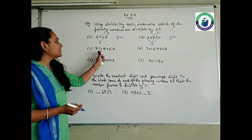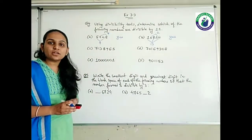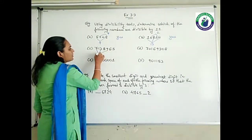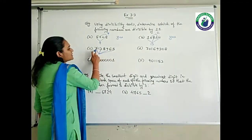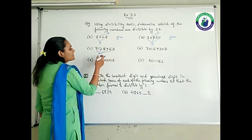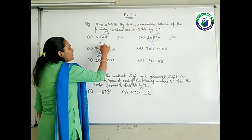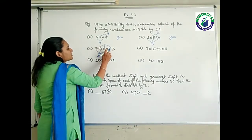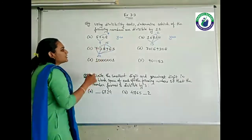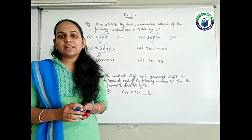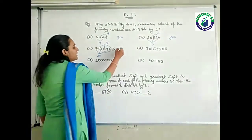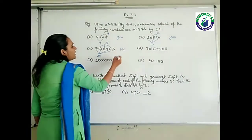Next one: 7138965. Odd place digits: 7 plus 3 is 10, 10 plus 9 is 19, 19 plus 5 is 24. Even place digits: 1 plus 8 plus 6 — 6 plus 8 is 14, plus 1 is 15. So 24 minus 15, I get 9. Since 9 is not divisible by 11, this number is not divisible by 11.